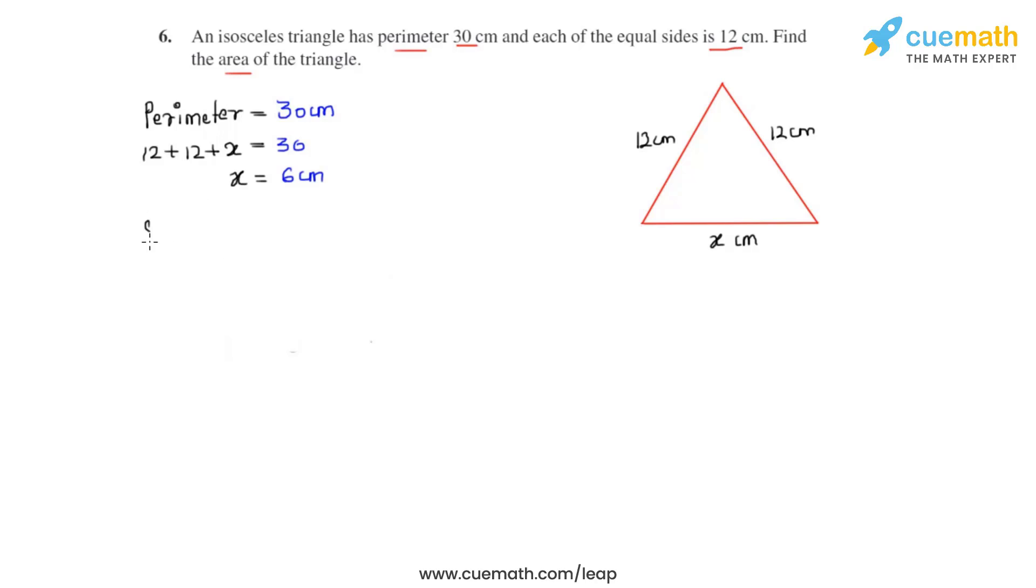Now that we have found the third side, our next step is to find the semiperimeter s for this triangle, which is nothing but half the perimeter. So we can simply divide 30 by 2 and we can get the semiperimeter s to be equal to 15 centimeters.